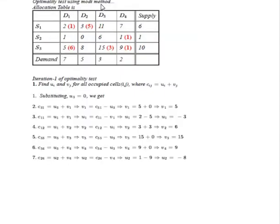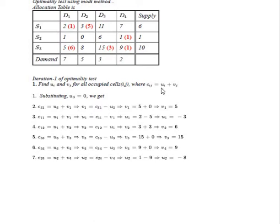Now we find the optimality test using the MODI method. Write the allocation table as shown. The occupied cells are S1D1, S1D2, S2D4, S3D1, S3D3, and S3D4. All other cells are unoccupied cells. For the first iteration of the optimality test, we find the dummy variables u_i and v_j for all occupied cells, where c_ij = u_i + v_j. We set u3 = 0, since we can assign any one u_i or v_j equal to zero.